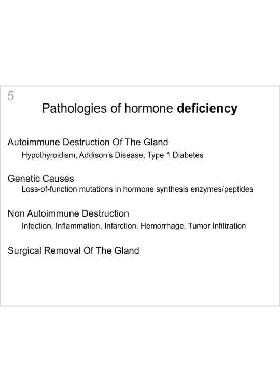Pathologies of hormone deficiency can be caused by autoimmune destruction of the gland — for instance, types of hypothyroidism, Addison's disease, and type 1 diabetes, famously caused by immune destruction of beta cells. There can be genetic causes such as loss-of-function mutations in hormone synthesis enzymes. Non-autoimmune destruction of the gland can also occur through infection, inflammation, infarction, hemorrhage, or tumor infiltration. Surgical removal of the gland will also lead to deficiency in the hormone it produces.